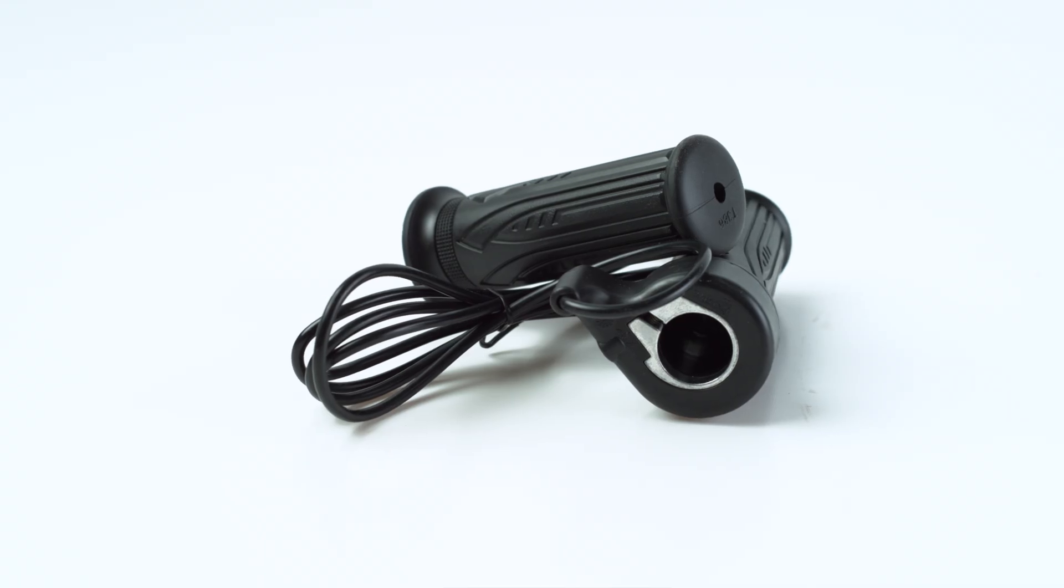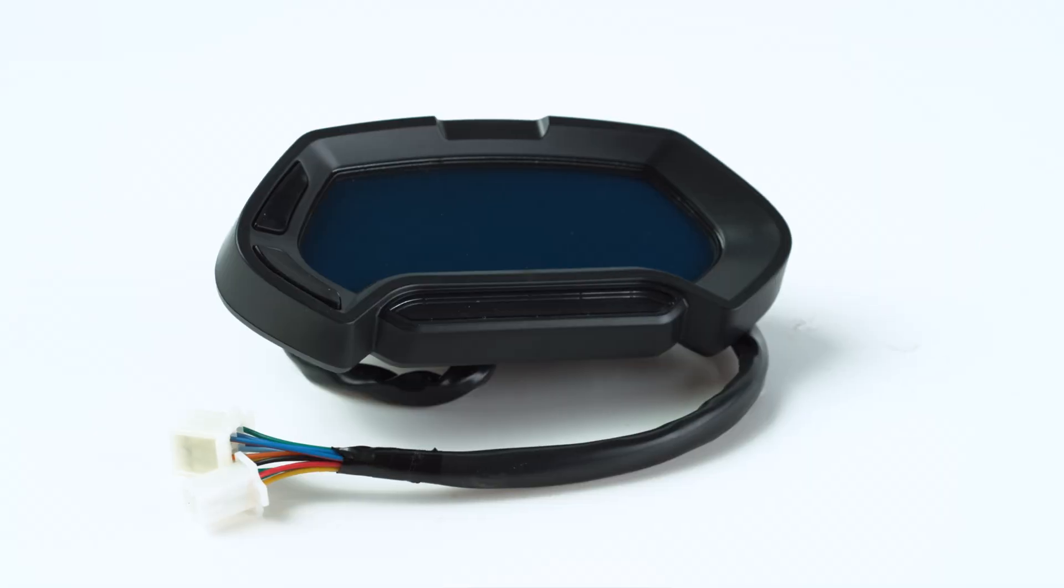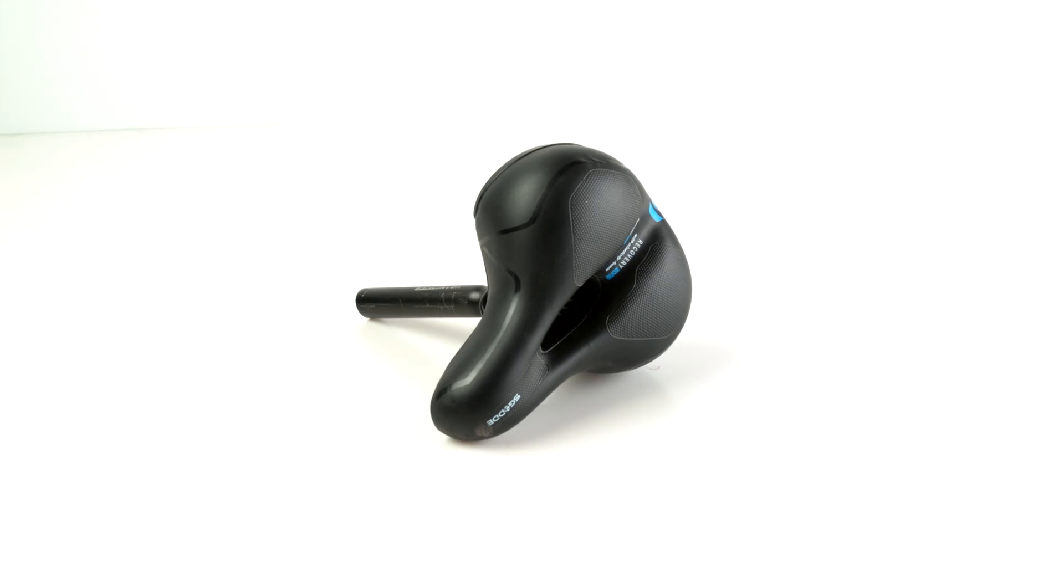An electric bicycle is basically a collection of parts and components connected on one central frame like this one here. Now on this frame we have common components like your seat, your brakes, your wheels, stuff you'd recognize from normal bicycles.